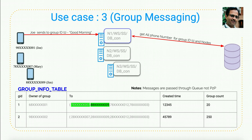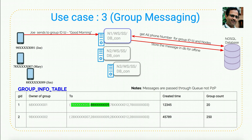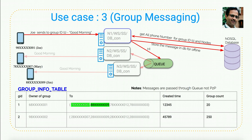The message goes to node 1, which connects to the database to look up which users belong to group ID 1 — for example, users with numbers starting 788, 78, and 78. Node 1 stores the messages in the backend database for offline messaging, then constructs queue messages for all those users and sends them to the queue. Different nodes waiting on the queue receive the messages and send them directly to users like Mary and Jim via WebSocket communication.